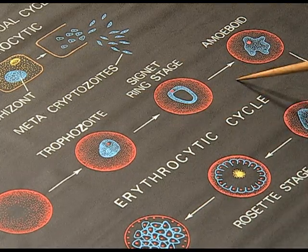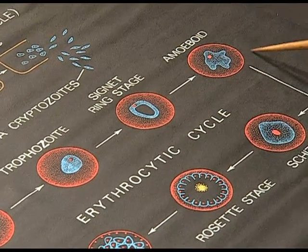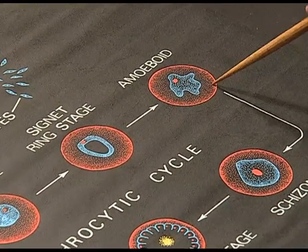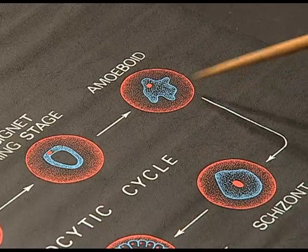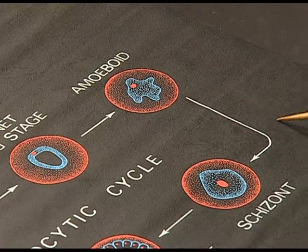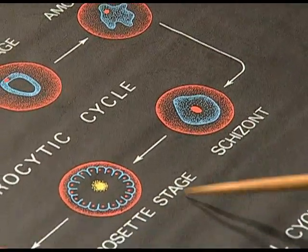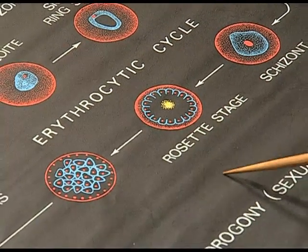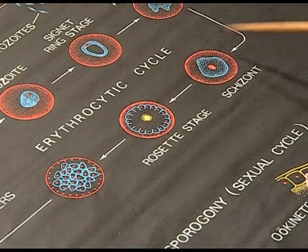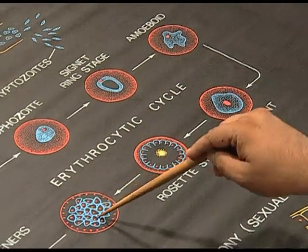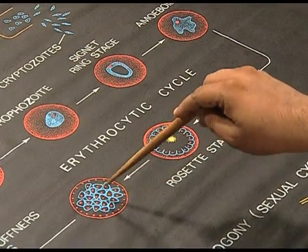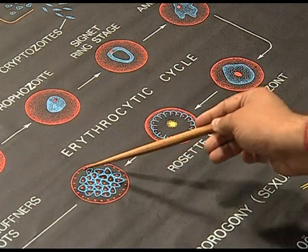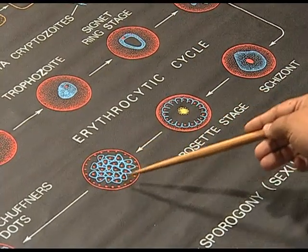After these stages, the next is the amoeboid stage, which is an irregular stage present inside the RBC. After further development, they will form a rosette prior to the schizont. Basically, the schizont is not a definite structure — it is the development of the amoeboid structure into different microcells known as merozoites, inside the pericytophorous membrane within the RBC.